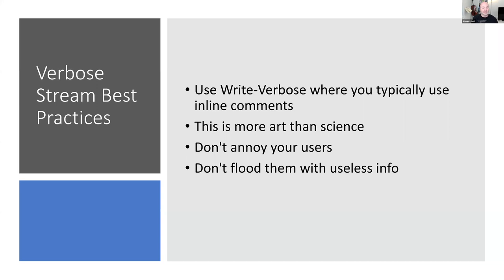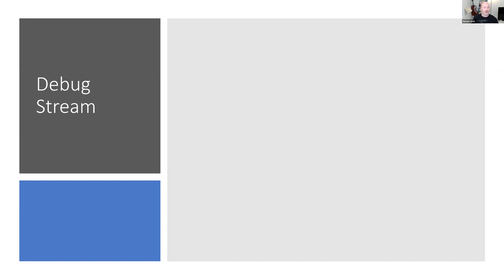Verbose stream best practices: use Write-Verbose where you'd typically use inline comments. Where you'd write '# here's where we get all the computer names', put Write-Verbose instead — then when someone uses -Verbose, they actually see it on screen. Don't put so much in there that it hides the content. Don't flood users with useless information. Do give relevant feedback. Find out what works for you.